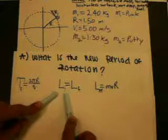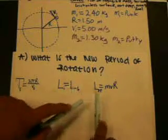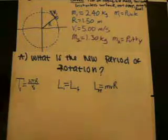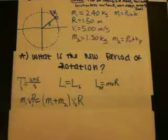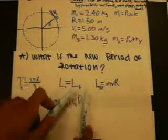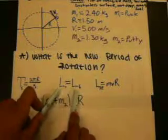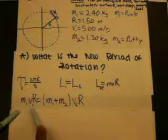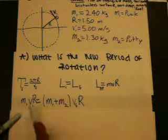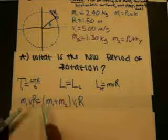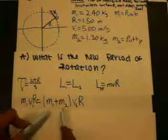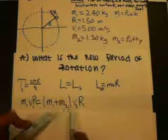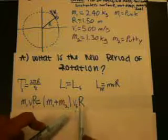Using the conservation of angular momentum and the angular momentum for a point particle, which is just MVR. Plugging in the angular momentum for a point particle to the conservation of angular momentum, we get MVR, or mass 1 times velocity initial times the radius equals the combined mass of the puck and the putty times the final velocity times the radius.